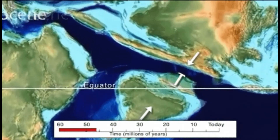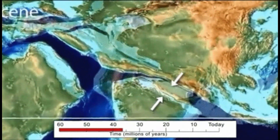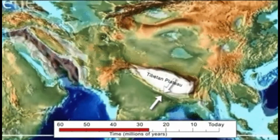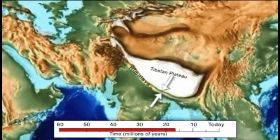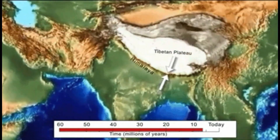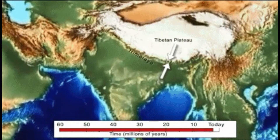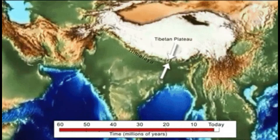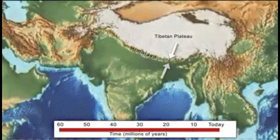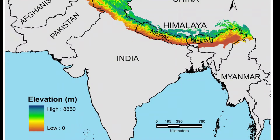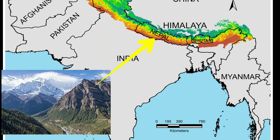Converging continental crusts or plates results in a collision zone which could cause shallow earthquakes. At that place, a crack called a fault is formed. This type of convergence will cause no subduction since the two plates have the same densities. There will be no volcanoes formed and no tsunamis. The convergence will result in a group of highland formations that we call mountain ranges.